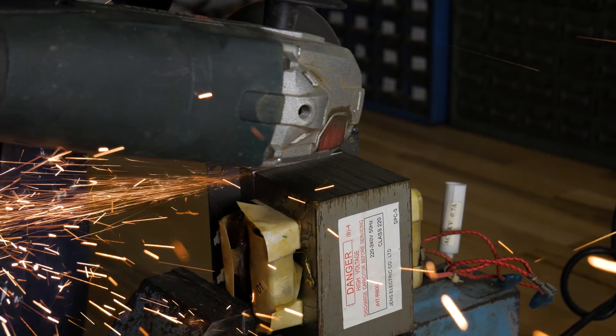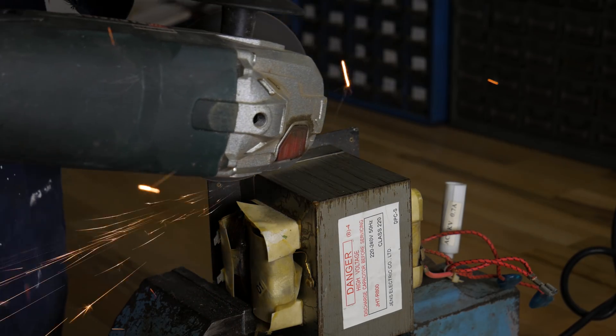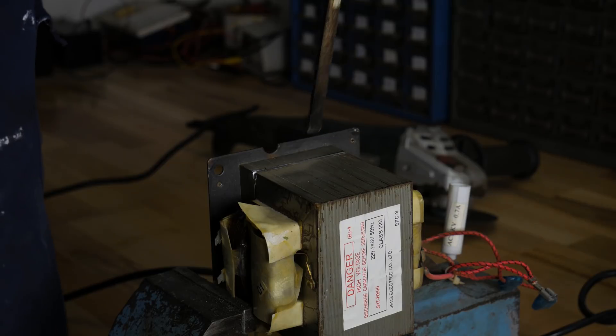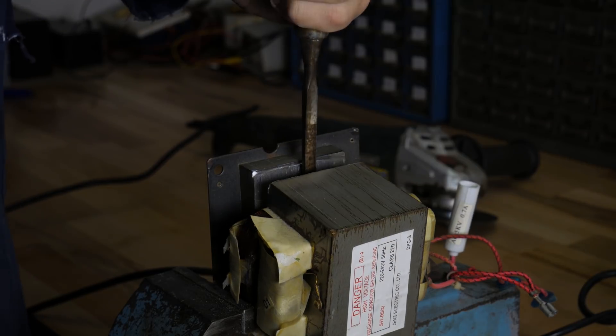I clamped transformer into the vice and use an angle grinder to cut through the welds and then with a chisel lift the bottom part of the transformer.